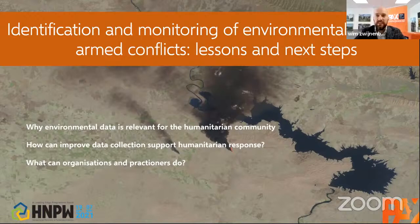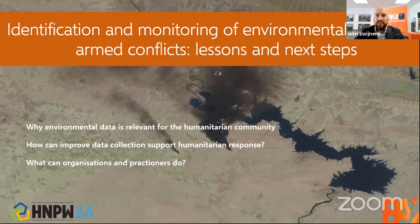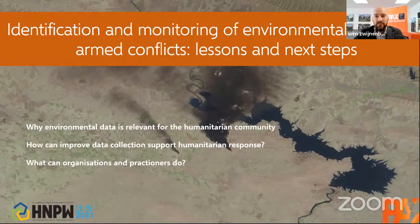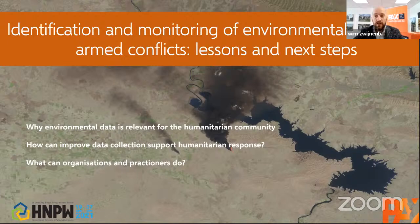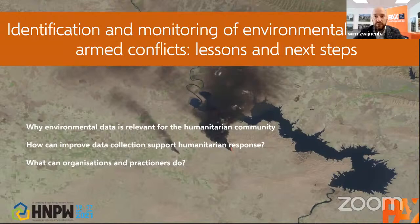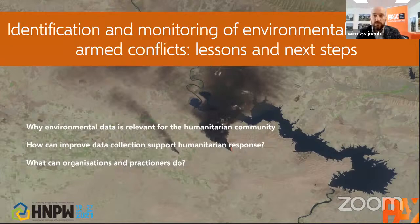Thank you very much, Rohini, and thanks everyone for joining. Rohini was an inspiration of mine when I was doing training at UNITAR on GIS and humanitarian response. It was very stimulating for me as an amateur in this field to explore all the opportunities for earth observation and remote sensing. Today I want to quickly dive into the broad strokes of the work we're doing on identification and monitoring of environmental impacts of armed conflicts, why this is important for humanitarian response, what opportunities there are for humanitarian organizations to improve data collection, and what next steps are ahead of us. I'll use examples from Syria and Yemen.